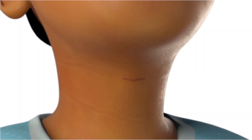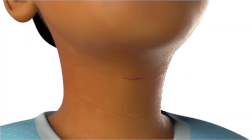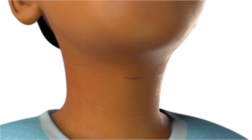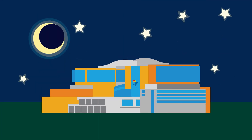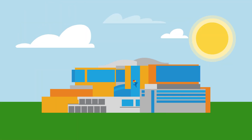The wound is then closed with stitches that are hidden under the skin and don't need to be removed. A drain is also placed, and Steri-strip bandages may be placed over the wound while it's healing. The procedure will generally require an overnight stay at the hospital, and your child's doctor will take out the drain the morning after surgery.